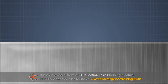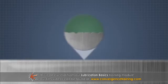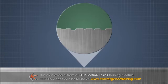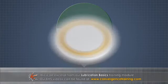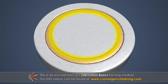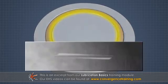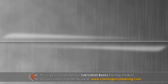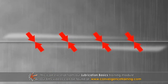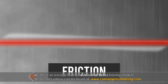No matter how smooth a metal surface might appear, at a microscopic level the surface is a collection of irregular ridges and valleys. When two surfaces — for example, two metal faces of a journal bearing — try to slide against one another, the interaction of the two surfaces causes a resistance to motion, or friction.